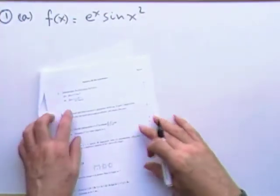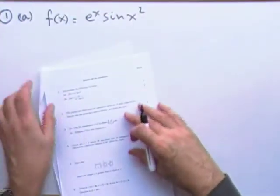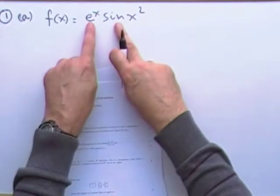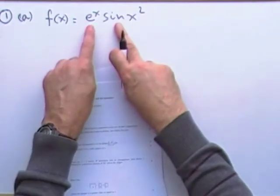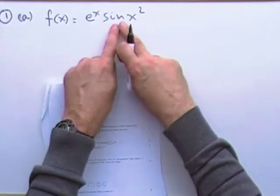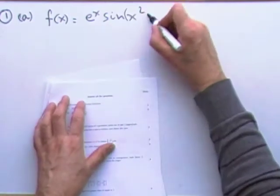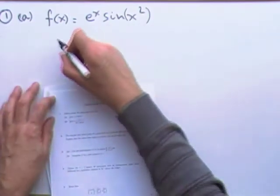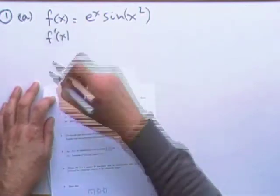So the first question to start off, just checking that you can differentiate properly. Here you've got a product of two different types of functions, and the second one is a function of a function. You can always emphasize that by putting that in brackets. So for three marks it just says differentiate it.